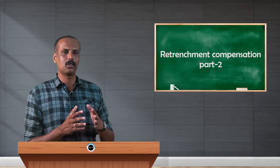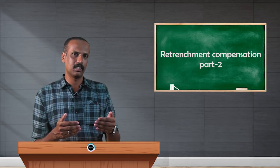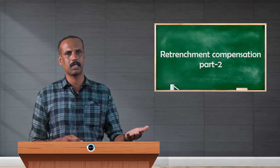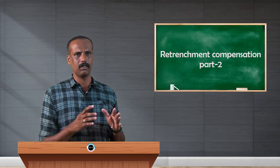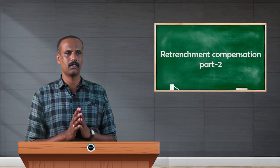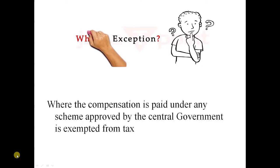The compensation is exempted to the extent of the least of three things: one is actual amount, second is 5 lakh rupees, and third is as per the provisions. There is a main exception: where compensation is paid under a scheme approved by the central government, it is fully exempt from tax. If an employee receives compensation from an employer based on a scheme prescribed by the central government, the entire amount is exempted with no tax liability.